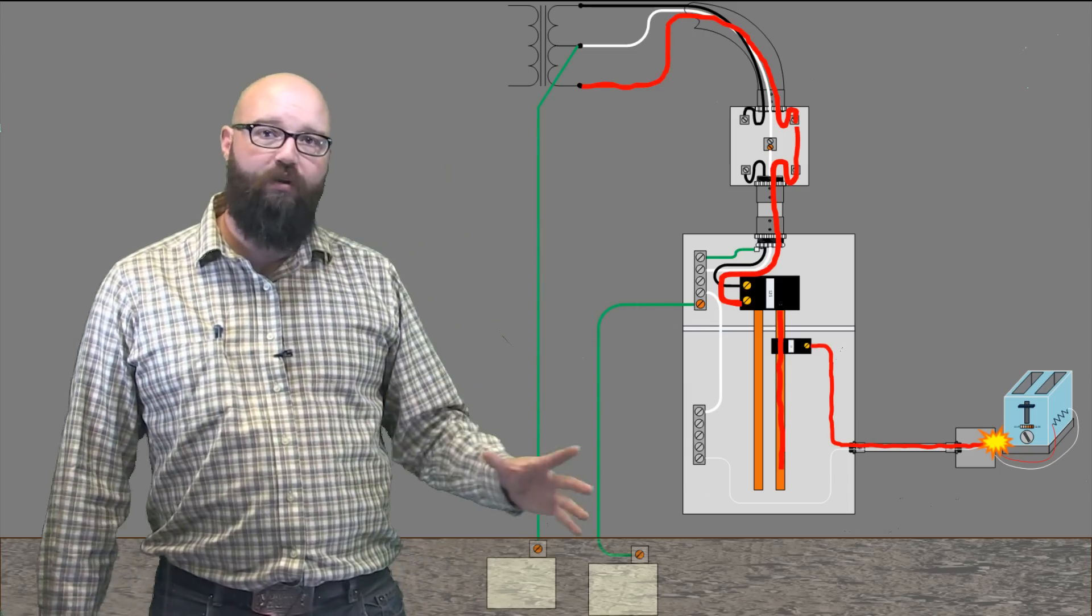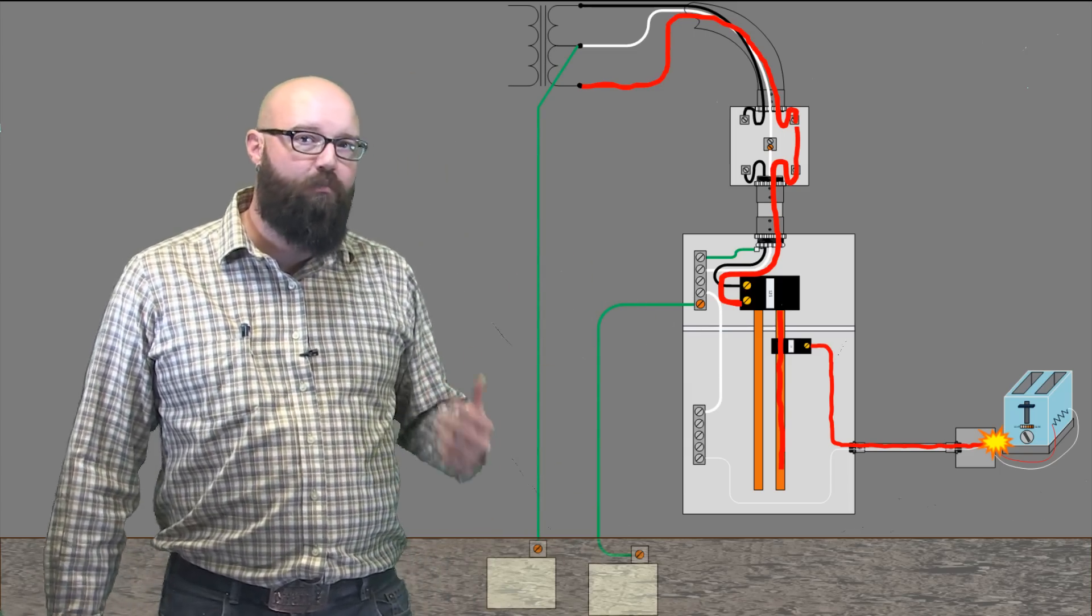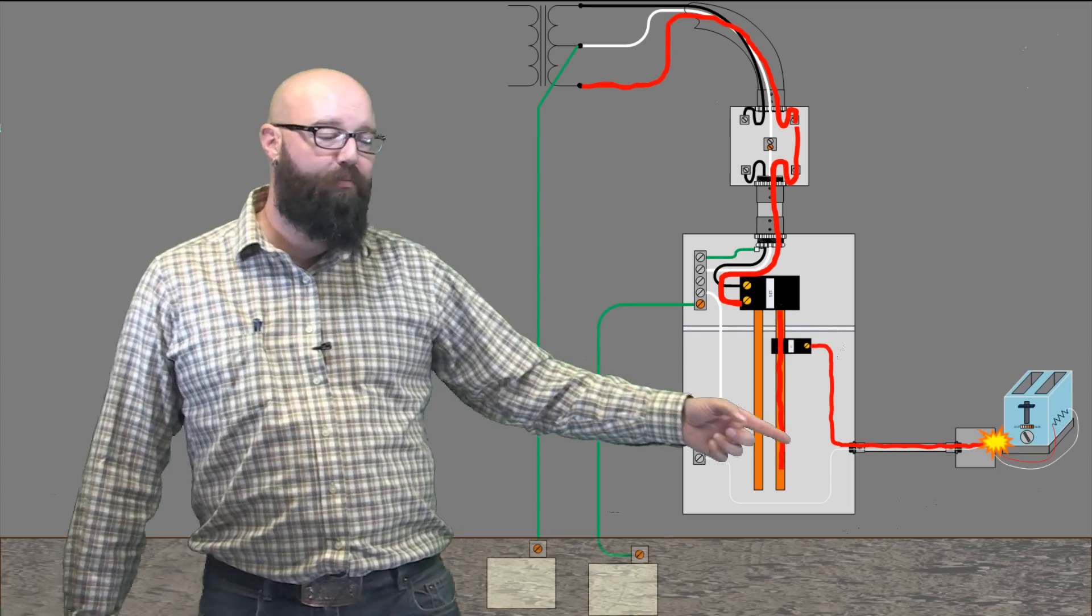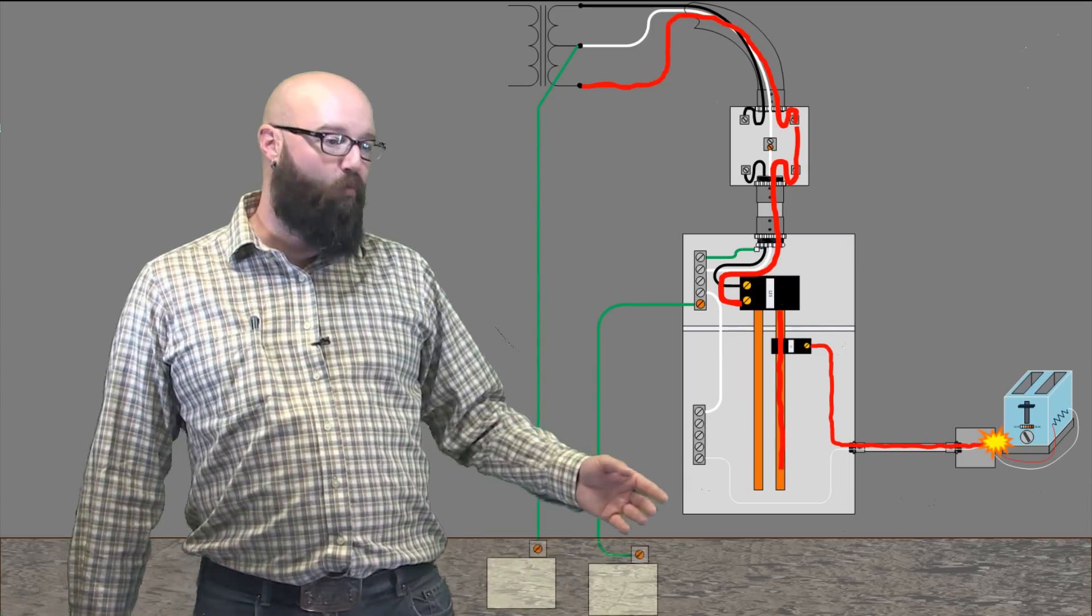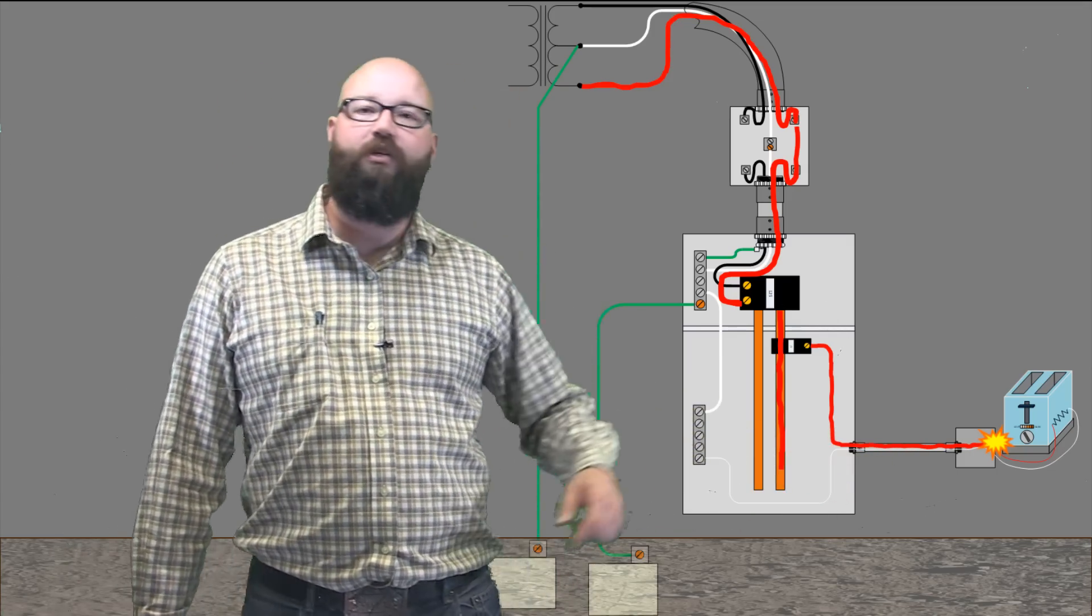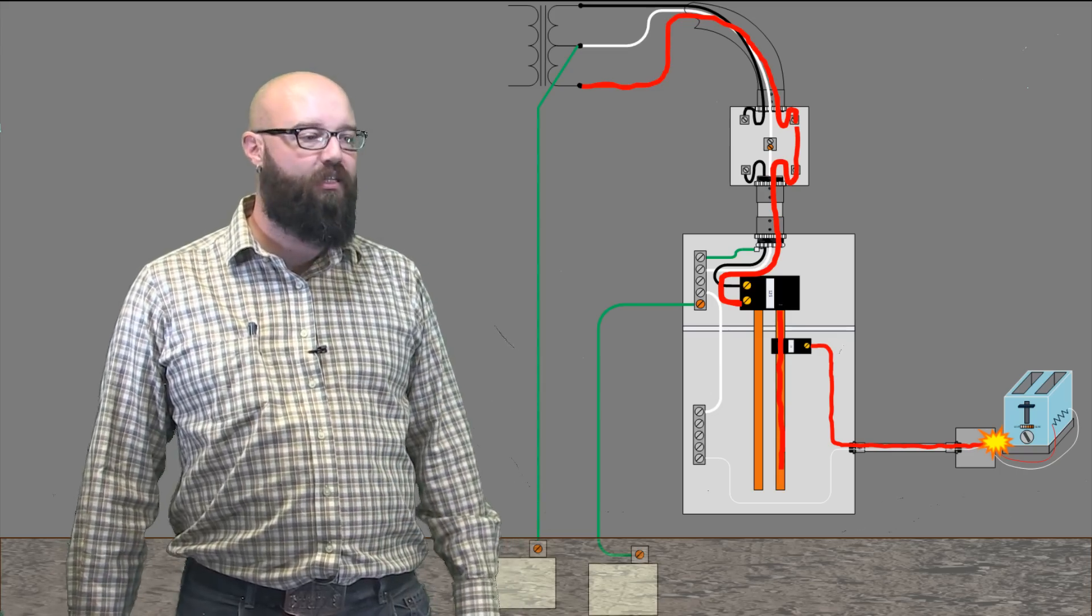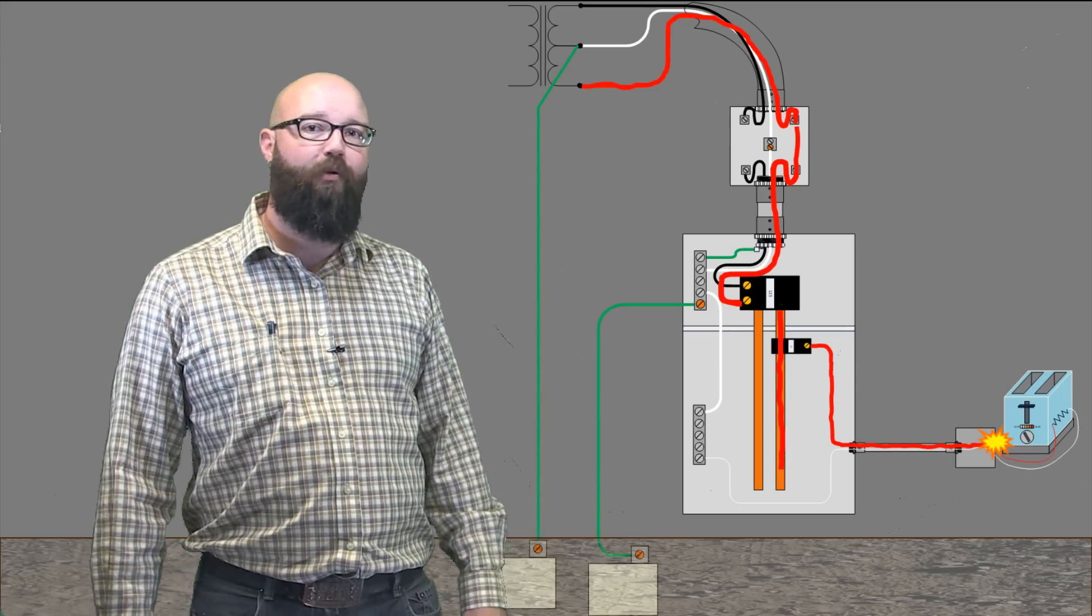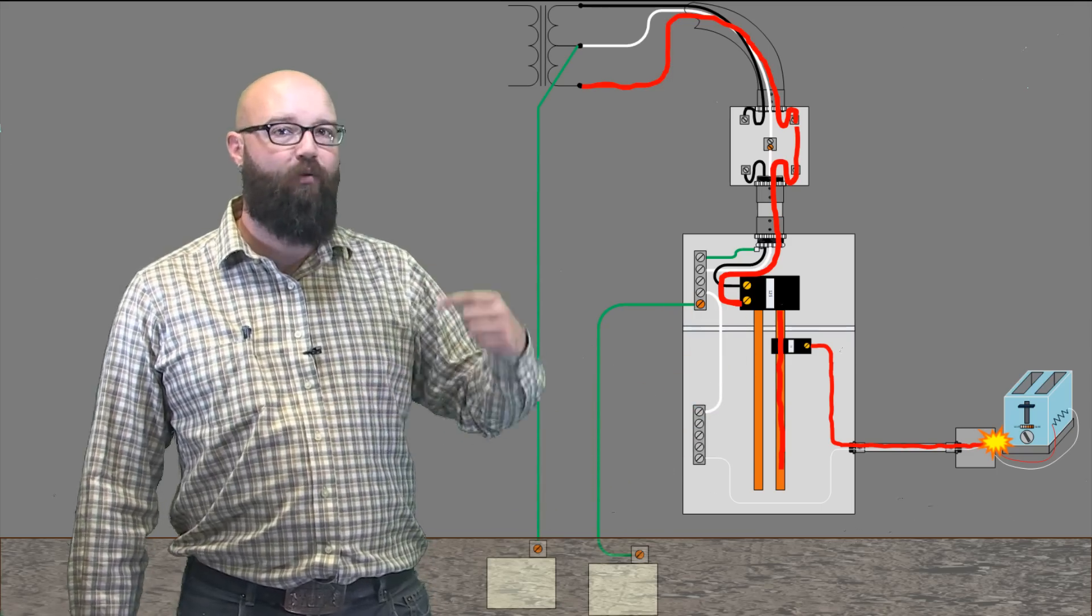Now our whole grounding and bonding system is designed to create a low impedance path. That low impedance path consists of all of our metal boxes, all of our metal raceways. We're making sure that all of these set screws and all of these lock nuts are done up tight. It's all part of our bonding system. If it's all bonded properly, it gives us sufficient low impedance path back.